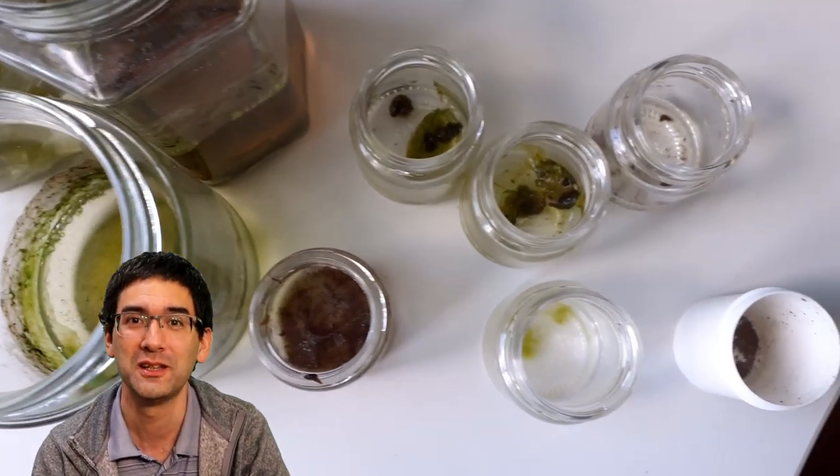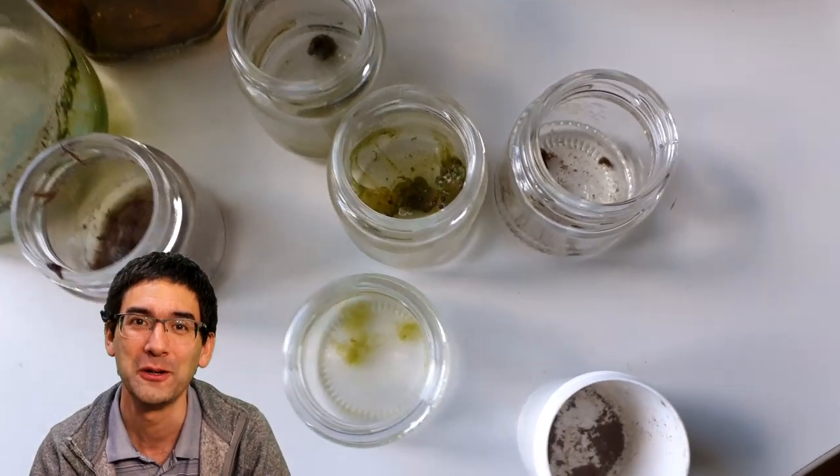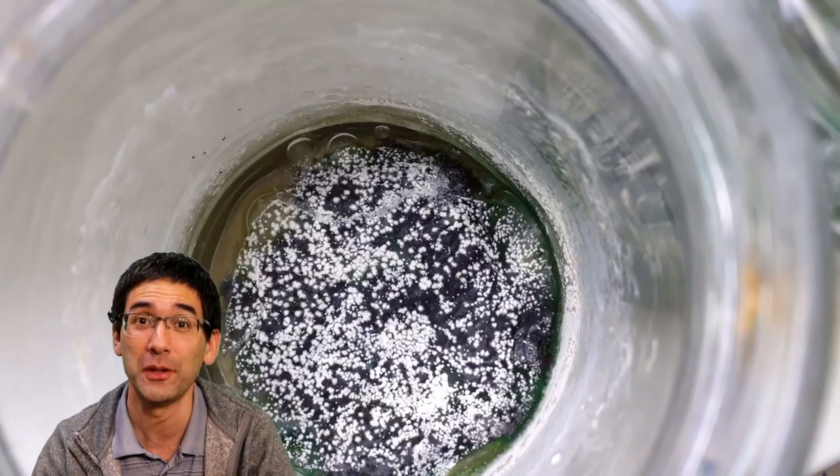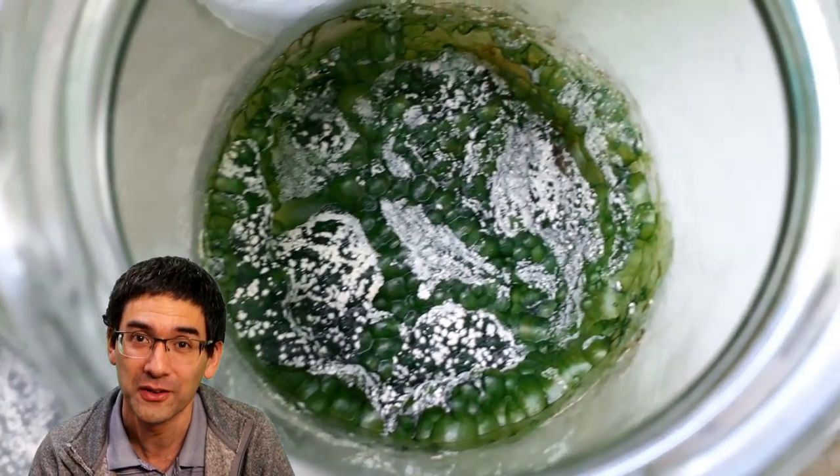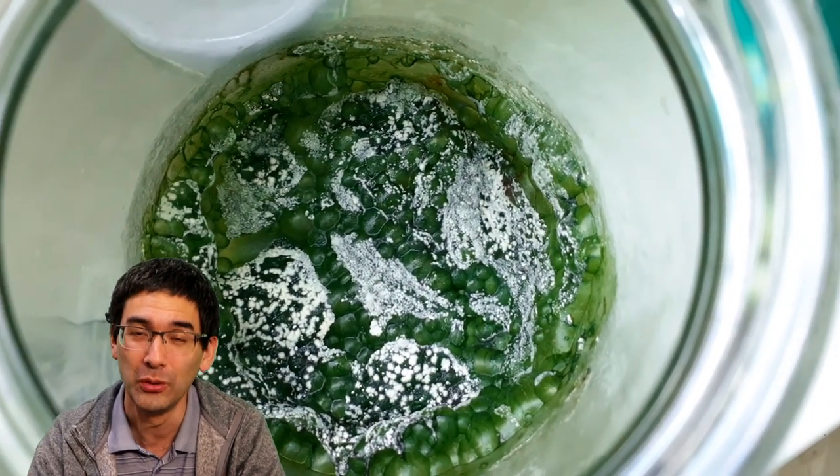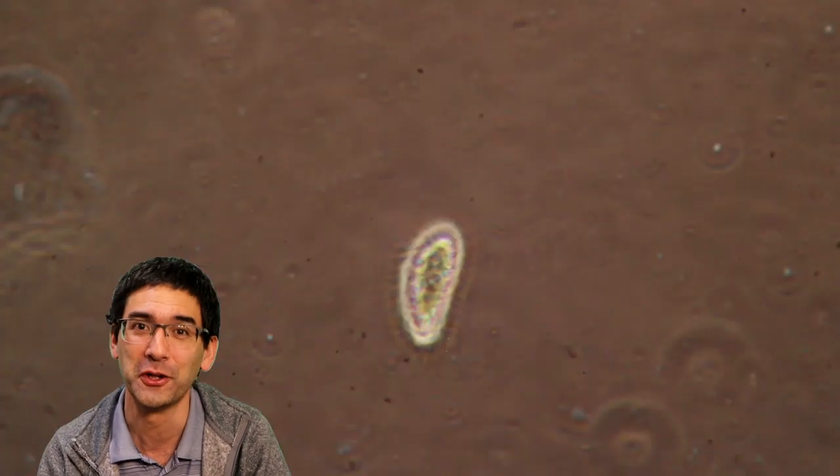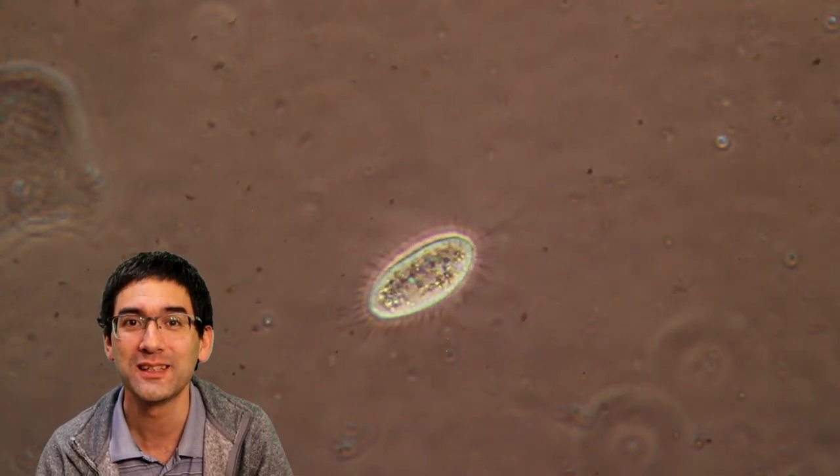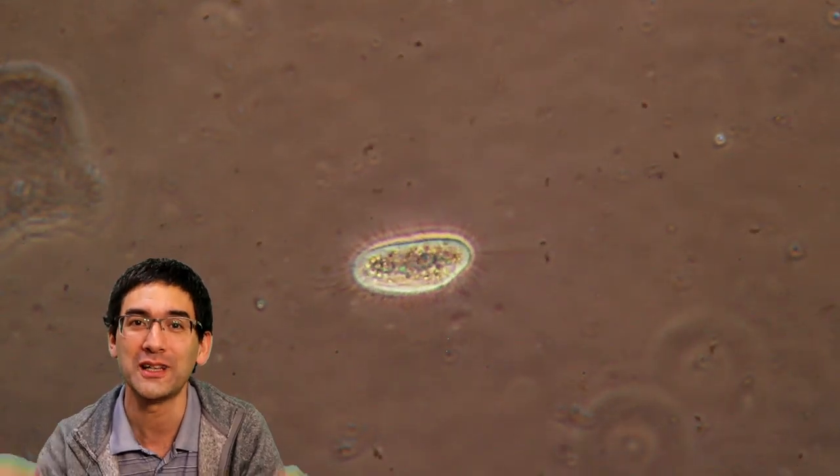You can see different types of jars and containers that I've been using here to grow it. That's also a possible result – there's a fungus growing on here; the whole thing started to get moldy and bad, also not very good. Here again, a nice ciliate moving around.